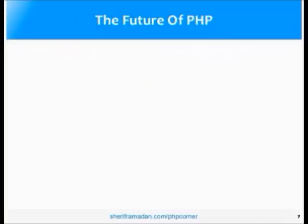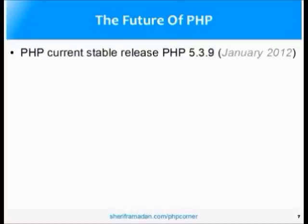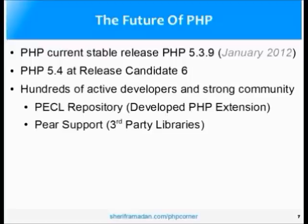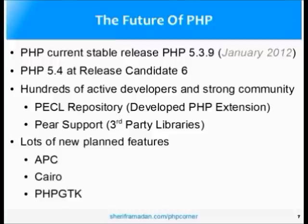So what does the future of PHP look like? It's currently a stable version of PHP 5.3.9 as of the time of this recording, and 5.4 is very close to being released with the sixth release candidate already out. There are hundreds of active developers that work on PHP all of the time, so you can rest assured it has a very strong community constantly developing new extensions and third-party libraries. There are also lots of new planned features being integrated into the PHP source tree, such as APC or Cairo. PHP GTK is another project to enable delivering desktop applications written in PHP.